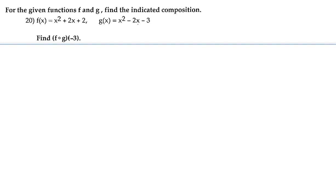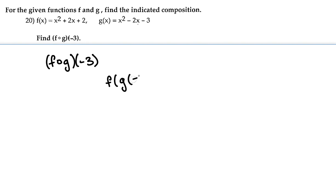Here we're going to be doing number 20. We have two functions, f and g. For these given functions we're going to find the indicated composition, which is f composition g of negative 3. This can also be rewritten as f of g of negative 3.